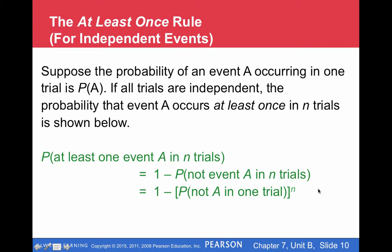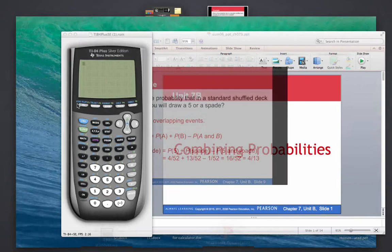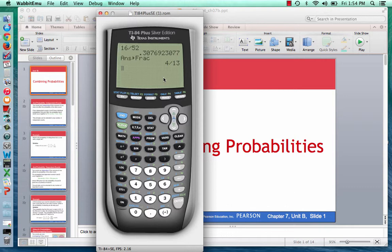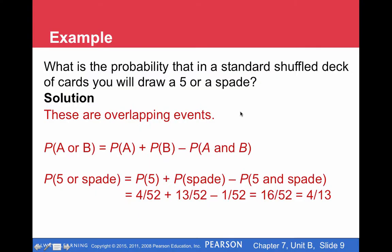Before we get to the at-least-once rule, let me show you a calculator technique. Sometimes your homework will ask for the answer in reduced form. For example, that last answer was sixteen divided by fifty-two. If you type in sixteen divided by fifty-two and press Enter, it gives you a decimal. Then press Math and the first option is to convert to a fraction — it will give you the reduced answer: four out of thirteen. Anytime you want to reduce a fraction, you can type it in, press Math, convert to fraction, and it will reduce it for you.